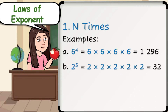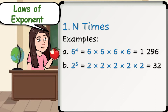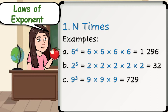Example letter B: 2 raised to 5 means you have to multiply 2 by itself 5 times. That is, 2 times 2 times 2 times 2 times 2, which is equal to 32. Example letter C: 9 cubed means you have to multiply 9 by itself 3 times. That is, 9 times 9 times 9, which is equal to 729.